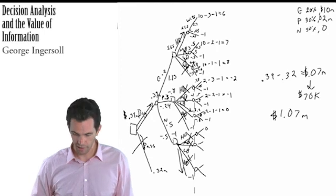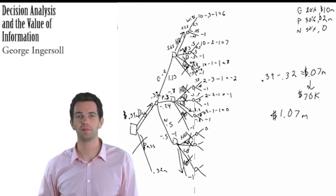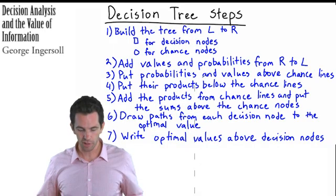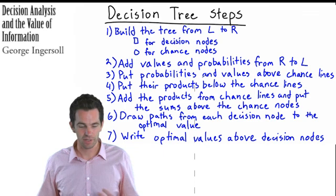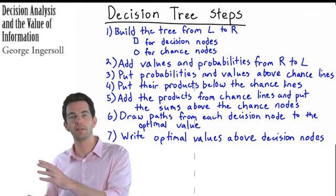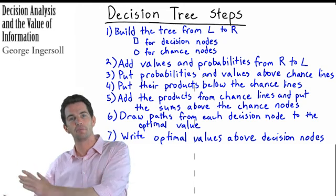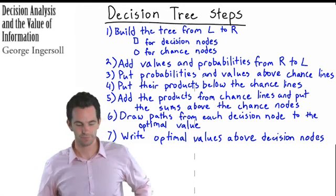Hopefully that makes sense to everybody. As I said, these decision analysis problems can get truly complicated and ugly, but if you follow these steps, the whole thing can get a lot easier. You really just have to build from left to right, then you start adding values and probabilities, and take those all the way back from right to left, until you end up with the final expected value. Thank you.